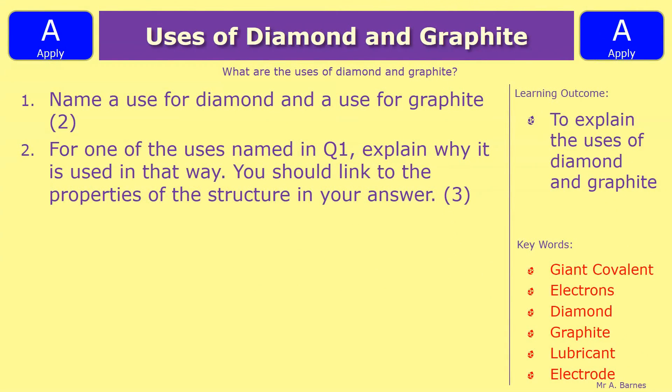Let's have a look at a couple of questions then. So the first one on this says name a use for diamond and a use for graphite. So it's asking you for a use for each. So if you were to put two uses of graphite and none for diamond, you would still only get the one mark.